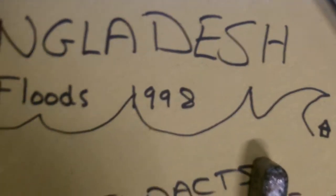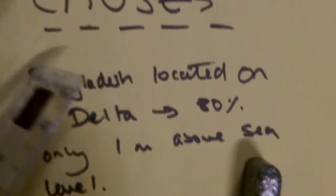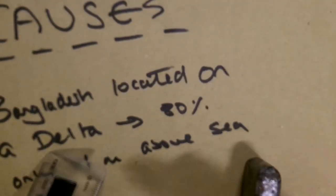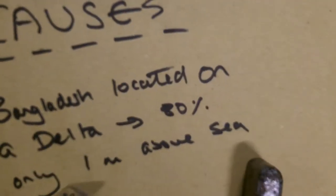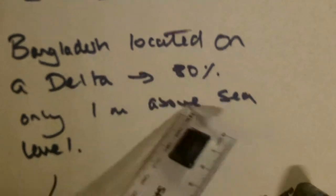The Bangladesh floods of 1998. What caused the Bangladesh floods was the fact that Bangladesh is located on a delta. This means that the land is very flat, and 80% of the land is only one metre above sea level.